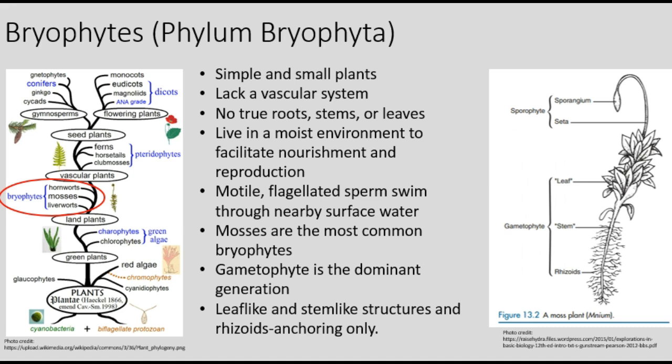Their motile, flagellated sperm swim through nearby surface water to engage in sexual reproduction with female gametes called eggs. Mosses are the most common bryophytes. The gametophyte is the dominant generation, growing larger and living longer than the sporophyte generation — it is the part of the plant you would recognize most. Leaf-like and stem-like structures and rhizoids are present; rhizoids are only used for anchoring. The sporophyte is attached to the gametophyte, and the sporangia are on a seta.